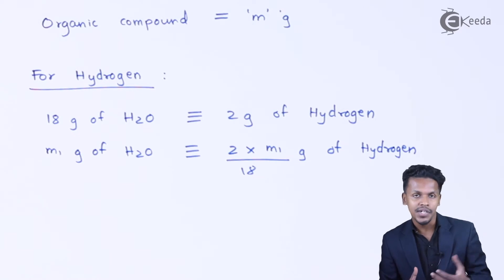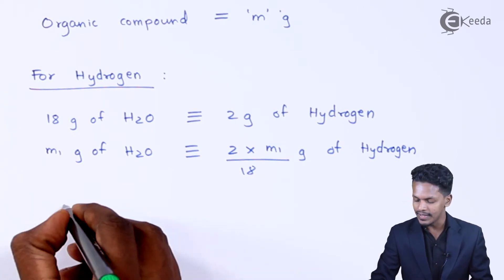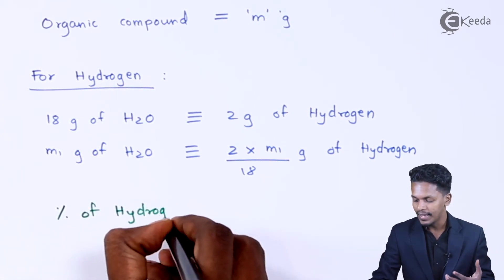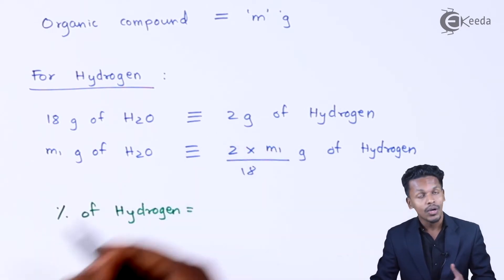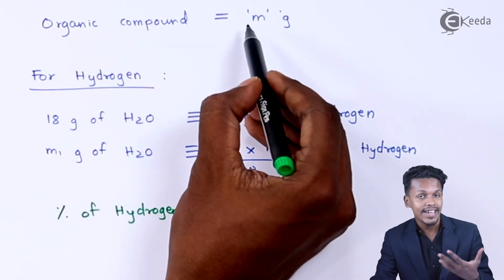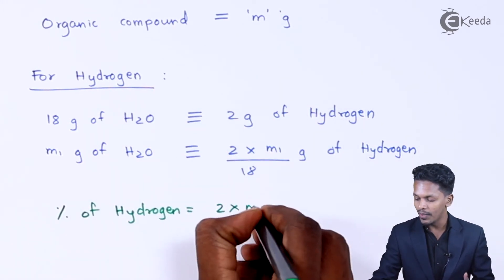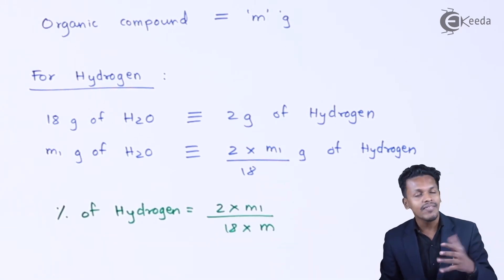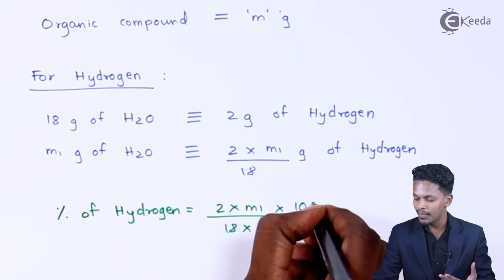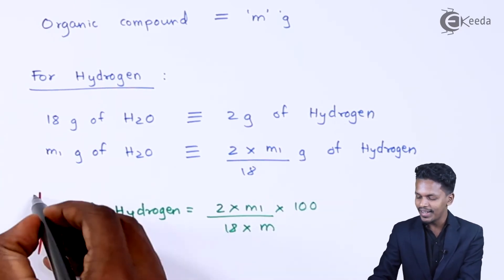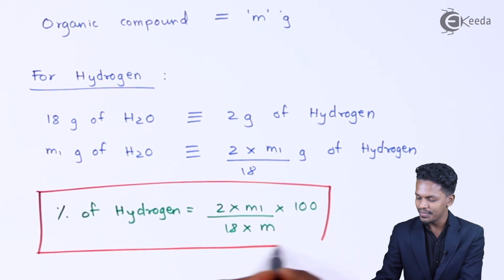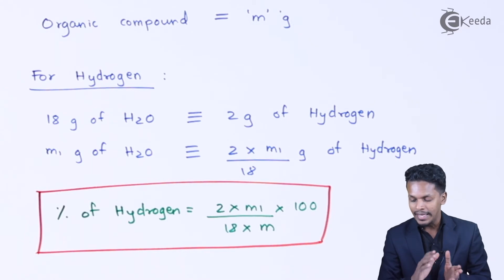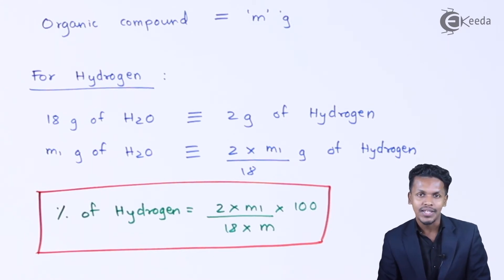If we have to determine the percentage of hydrogen, we divide the amount of hydrogen obtained by the weight of the organic compound taken (m grams) and multiply by 100. So the percentage of hydrogen = (2 × m1) / (18 × m) × 100. This is one of the easiest methods to determine the percentage of hydrogen.